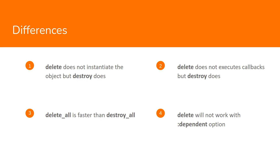The first difference is that delete does not instantiate the object, but destroy does. Whenever you want to remove an active record instance from the database using delete, it simply deletes that record without instantiating it first. The delete method just takes an ID argument and deletes the record without instantiating it.